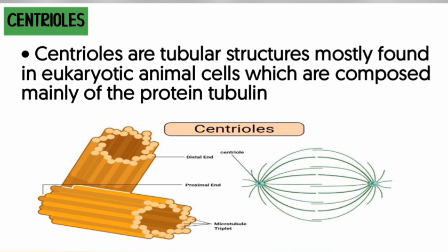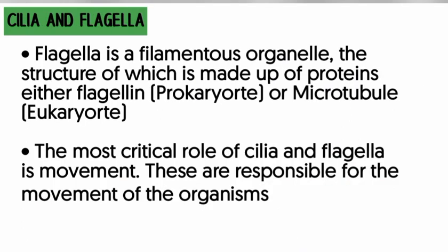Moving to the structures for movement: cilia and flagella. The flagellum is an organelle made up of proteins, which can either be flagellin or microtubule protein. If the protein is flagellin, it means it is a prokaryotic cell, but if the protein present in the flagellum is microtubule protein, it is a eukaryotic cell. Both flagella and cilia have the same function: movement — not just movement of the organism from one point to another, but also moving materials from the surroundings into the cell, for example during feeding.